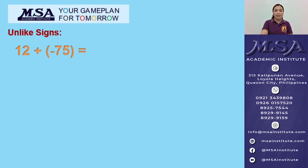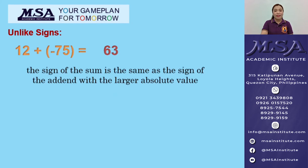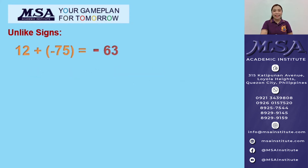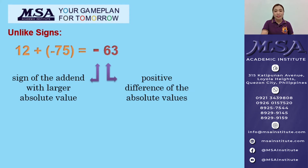What if we have unlike signs? Example: 12 plus negative 75. All you have to do is subtract the smaller absolute value from the larger absolute value. So we have 75 minus 12, which gives you 63. Then the sign of the sum is the same as the sign of the addend with the larger absolute value — and that is negative 75. Therefore, the sign of the sum must be negative, giving us negative 63.